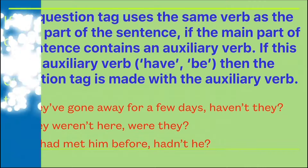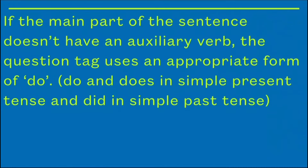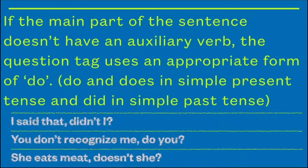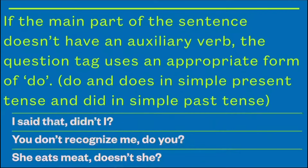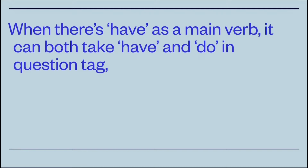If the main part of the sentence doesn't have an auxiliary verb, the question tag uses an appropriate form of the do-verb: 'do' or 'does' in the simple present, and 'did' in the past tense. For example, 'I said' — 'said' is past — so the tag is 'didn't I.' For 'You don't recognize me,' the do-verb itself is the main verb, so we extract 'do' — and since the statement is negative, we make a positive tag: 'do you.'